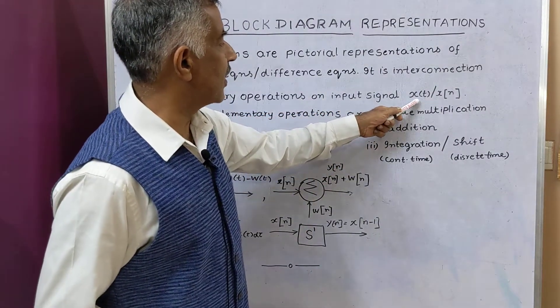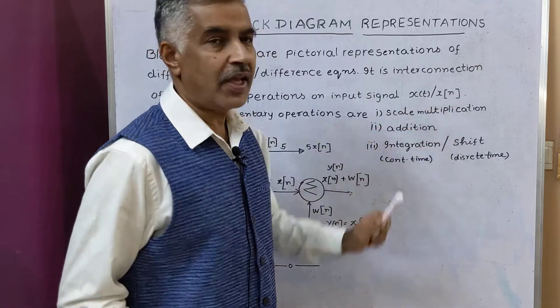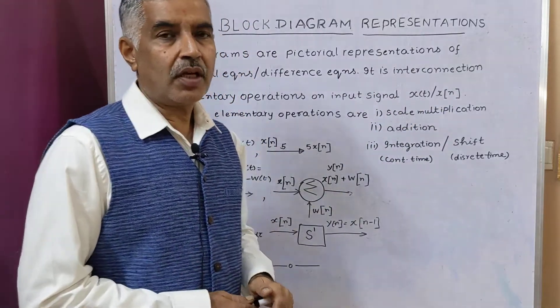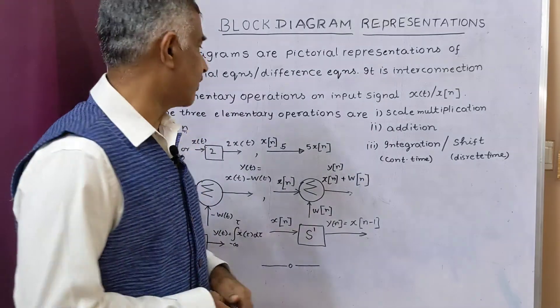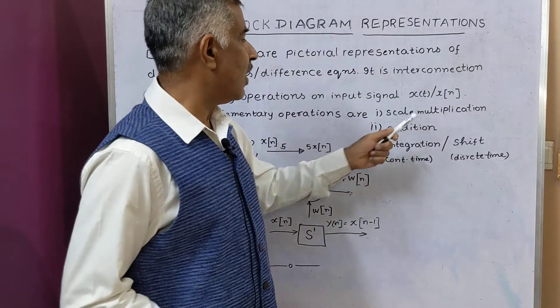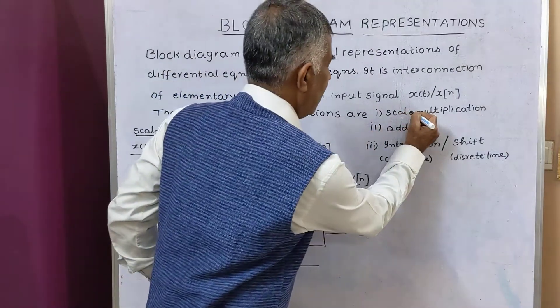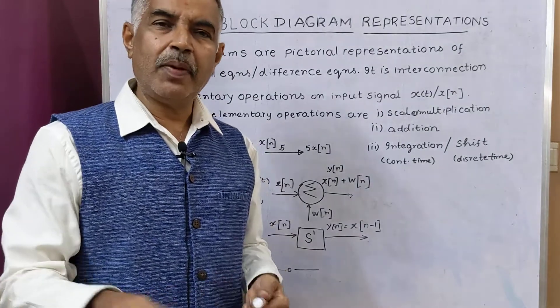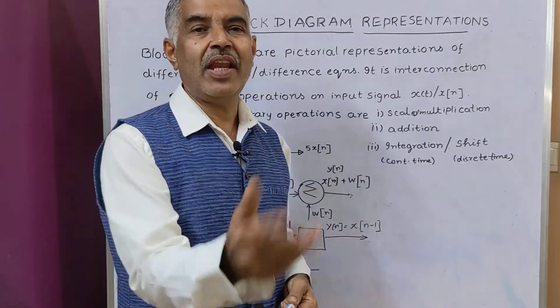If it is continuous time, it is x(t). If it is discrete time, x[n]. So there are three basic operations that are involved in block diagrams. These are number one, scalar multiplication. Scalar multiplication means multiplying an input signal by a scalar.